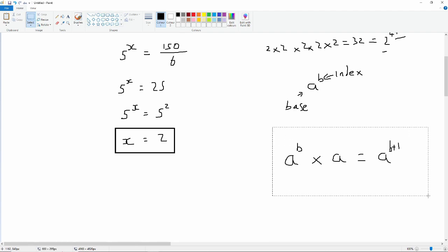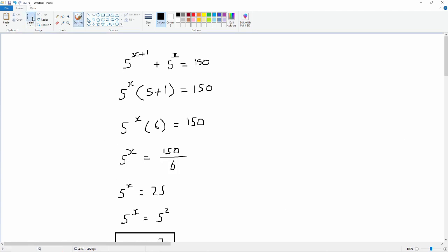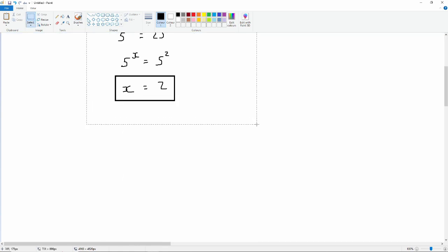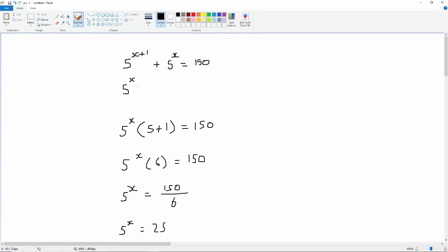Okay, so now with that out of the way, let's just move this stuff down. We can add an extra step here. We can say 5 to the power x plus 1 is the same as 5 to the power x multiplied by 5. And then we're adding to that the 5 to the power x. And that's equal to 150.